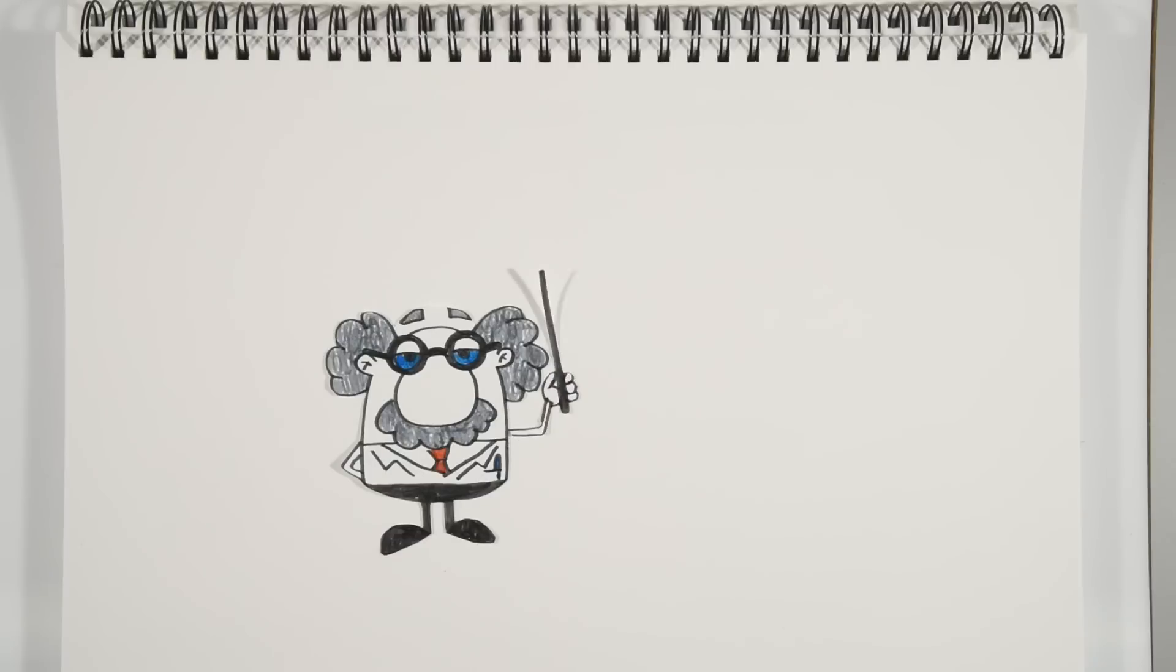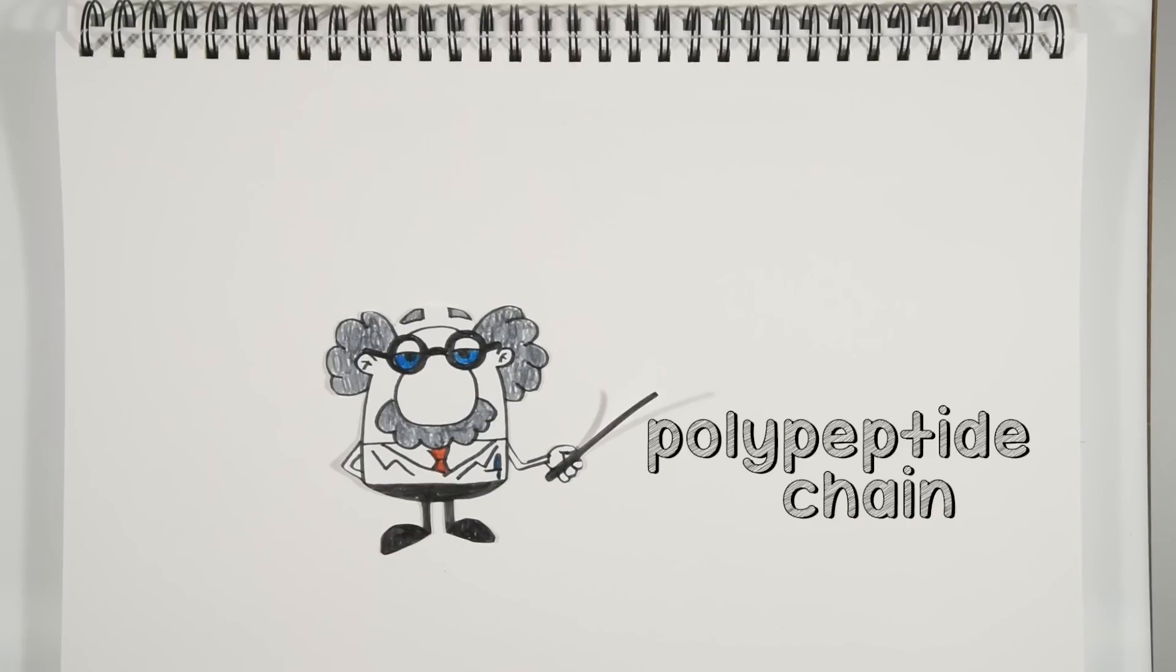You see, translation happens when a ribosome decodes mRNA to produce a polypeptide chain. Okay, okay, wait. Let's back up.